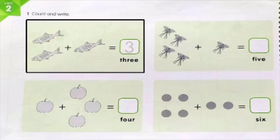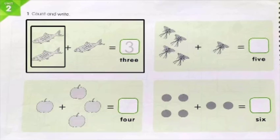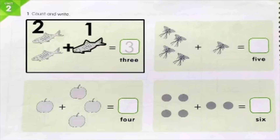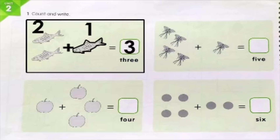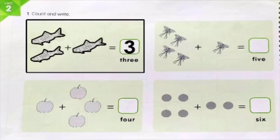One, two — there are two fish. You have to add how many more. Count how many fish there are to add: one. So how many fish do we get? One, two, three — we get three fish. You have to write number three in the box. It's already done for you in your book.